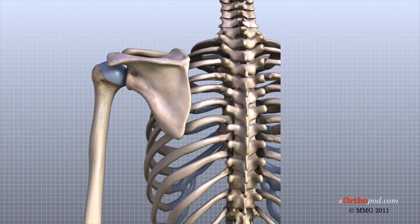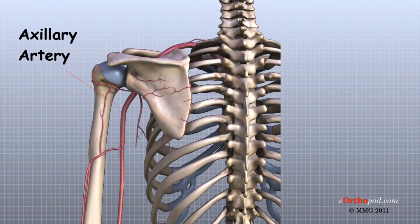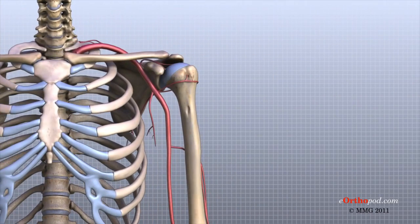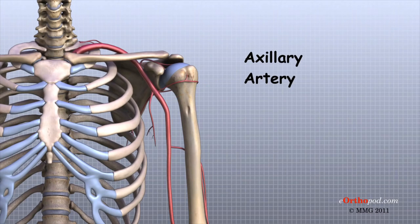Traveling along with the nerves are the large vessels that supply the arm with blood. The large axillary artery travels through the axilla. If you place your hand in your armpit, you may be able to feel the pulsing of this large artery. The axillary artery has many smaller branches that supply blood to different parts of the shoulder. The shoulder has a very rich blood supply.